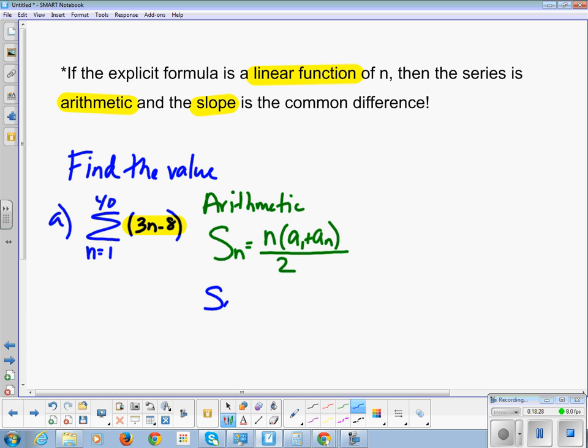All right. So, I want to find the sum of the first 40 terms. So, my n value is 40. My first term, yeah, I don't know. I don't know what my first term is, so I have to find it. I do that by plugging in 1 for n. So, 3 minus 8 is negative 5. So, my first term is negative 5. And, I need my 40th term. I do not have that, but I can find it by putting in 40, which is 120 minus 8, which is 112.